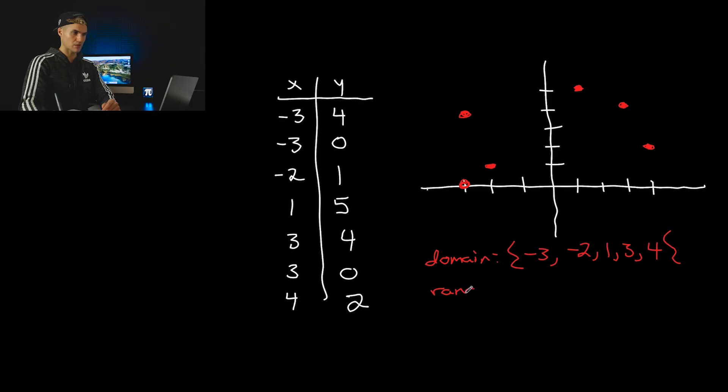And then we have our range. Range is not in order. So we have to look at it a little bit more carefully. So zero, there's two zeros, but we only write them once. We got one, we got two, four, five. And then as we mentioned over here, we are failing the vertical line test. So this relation is not a function.